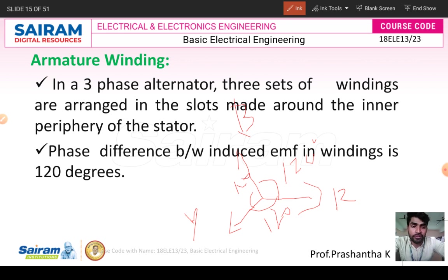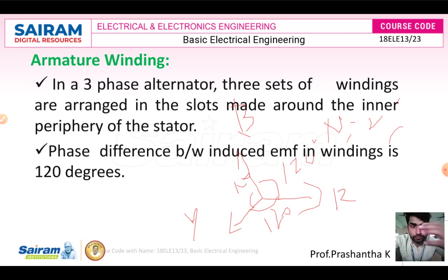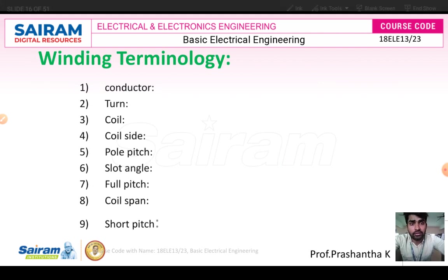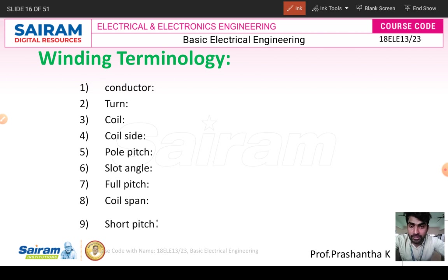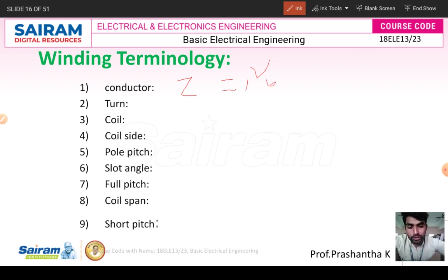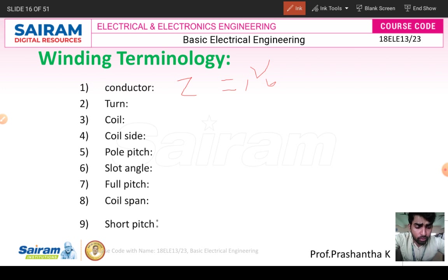The synchronous speed is Ns = 120f/P. When the rotating magnetic field cuts the stator armature conductors, an EMF is induced. The total number of conductors Z equals number of slots multiplied by conductors per slot. The number of turns per phase equals conductors per phase divided by two, because one conductor in one slot is connected to another conductor in another slot.